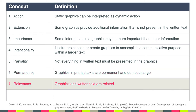And of course that sounds completely obvious to us as adults, but this is something that children need to learn about graphics. The seventh concept is related to relevance — the idea that usually graphics and written text are relevant. This is especially true in picture books or story books, and also in textbooks that children will encounter in school, as well as things they'll encounter in the real world such as movie posters or street signs.